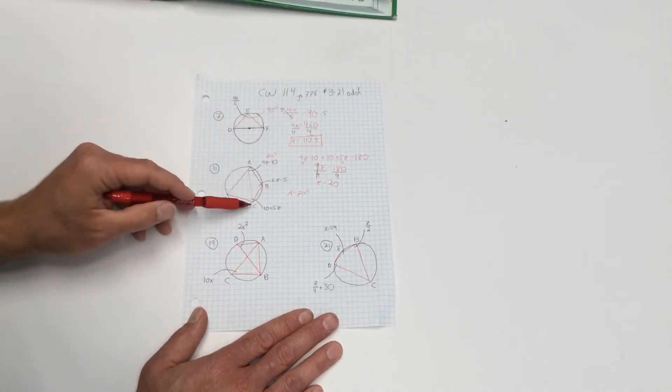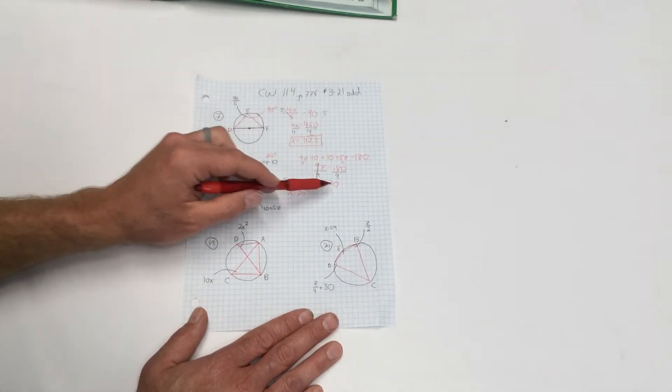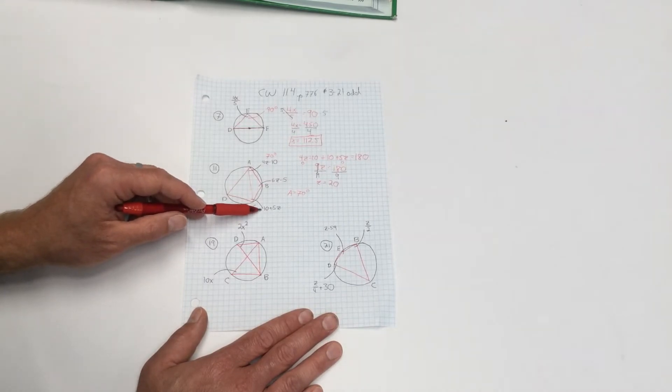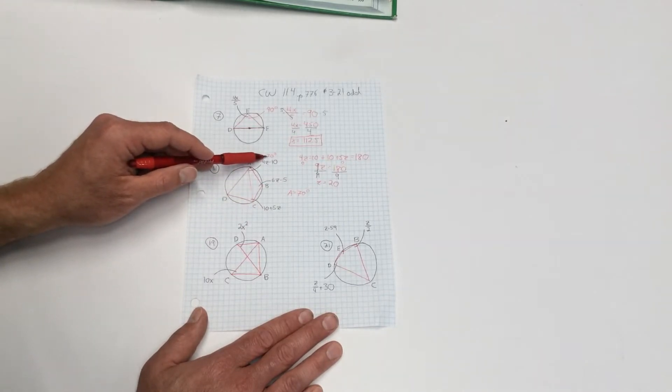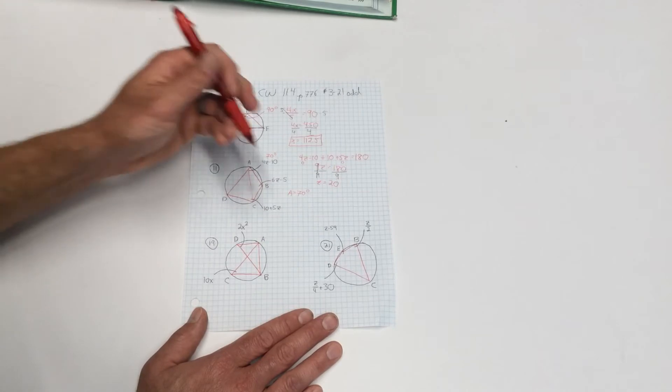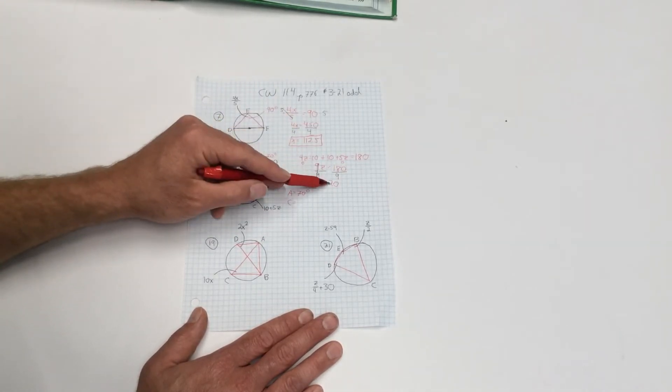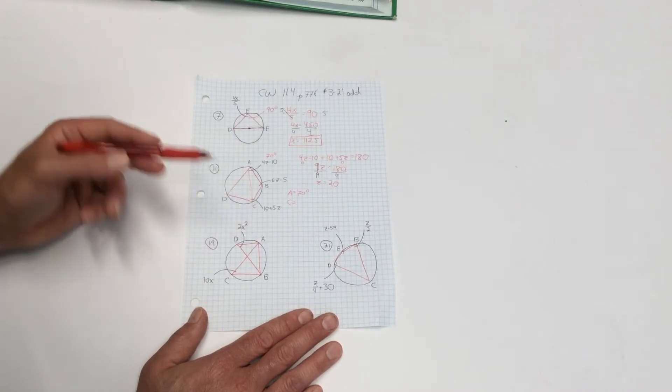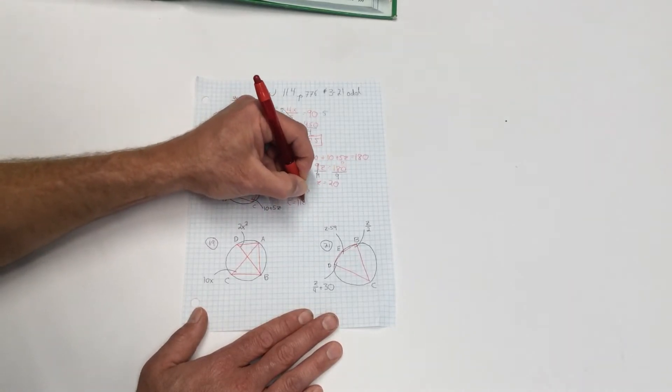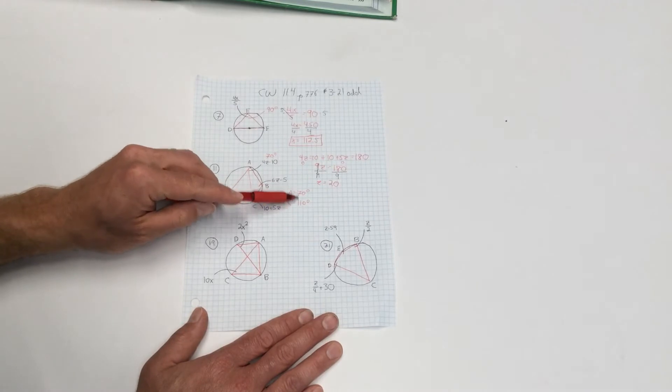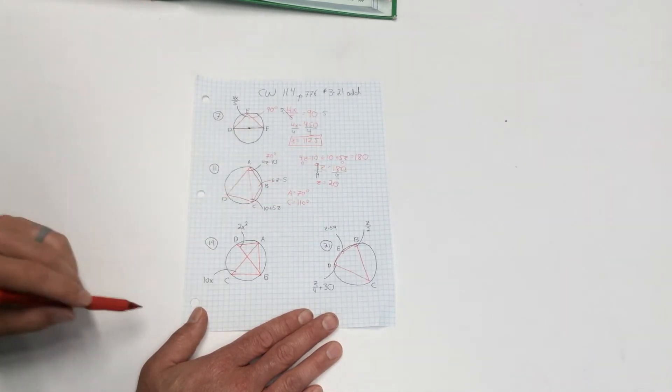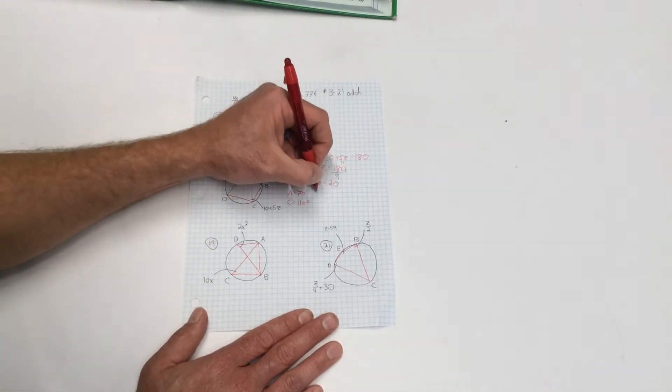Once you know one angle, you can quickly supplementary find this one. I can plug the 20 in here, and I can do that. Or I can subtract 70 from 180. So I can quickly see angle C must be 110. Double check. 20 times 5 is 100. 100 plus 10, 110. So it works. Those two angles, again, should always add up to 180. That's what allowed me to solve this.